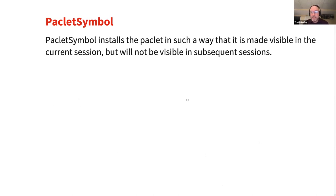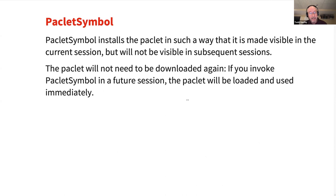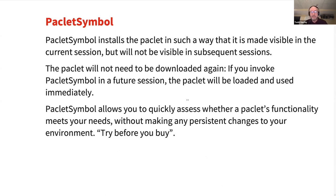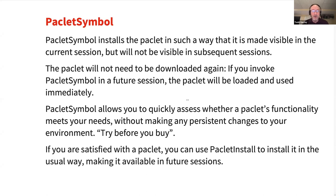An important thing: PACLITSymbol installs the PACLIT in such a way that it's made visible in the current session, but not visible in subsequent sessions by default. A PACLIT does not need to be downloaded again — if you invoke PACLITSymbol in a future session, the PACLIT will be loaded and used from its hidden location immediately. Basically, this function allows you to quickly assess whether a PACLIT does what you want without making any persistent changes to your environment. It's like a try-before-you-buy. If you like what it does, then call PACLIT install to install the PACLIT in the normal way, and it will just be available forever.